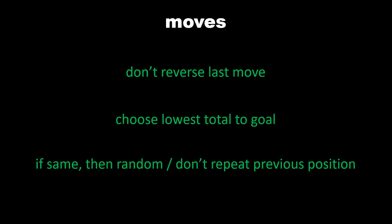We choose the lowest score, and if equal we make a random selection, but we don't want to repeat the previous position. Otherwise we could just have three tiles cycling in an infinite loop, which would break our algorithm.